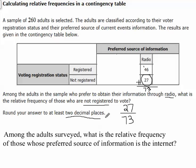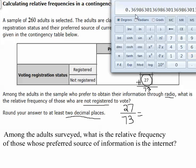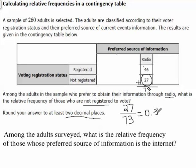We want to round to two decimal places. In your calculator, you're going to put 27 divided by 73, and you get 0.369863. They want us to round to at least two numbers after the decimal. So we go to the second number, which is a six, and look to the number after it. If it's five or greater, we round up. Therefore, our relative frequency is 0.37.